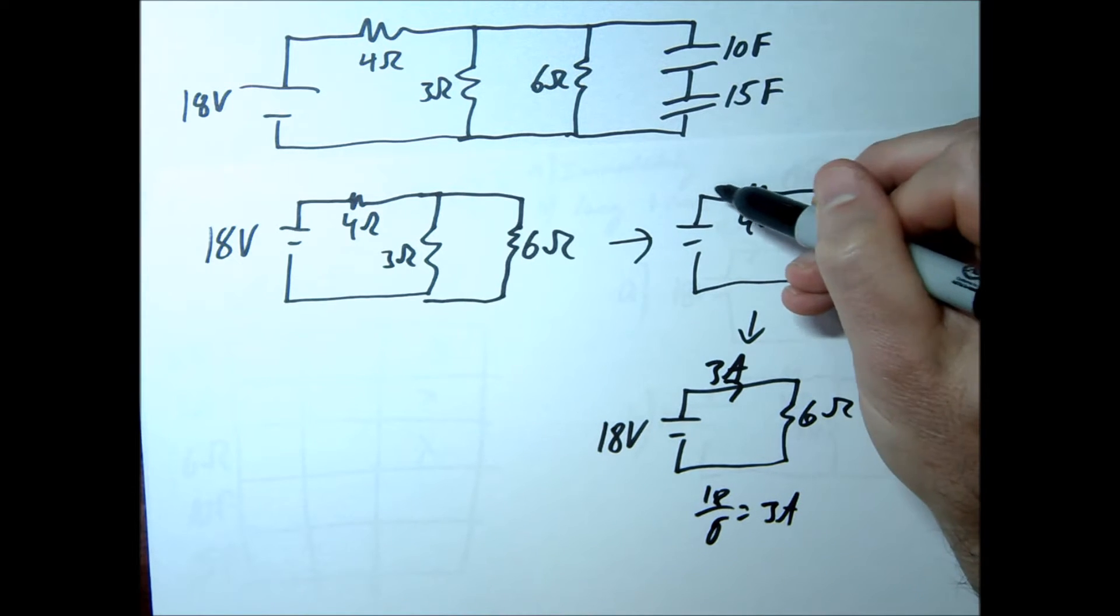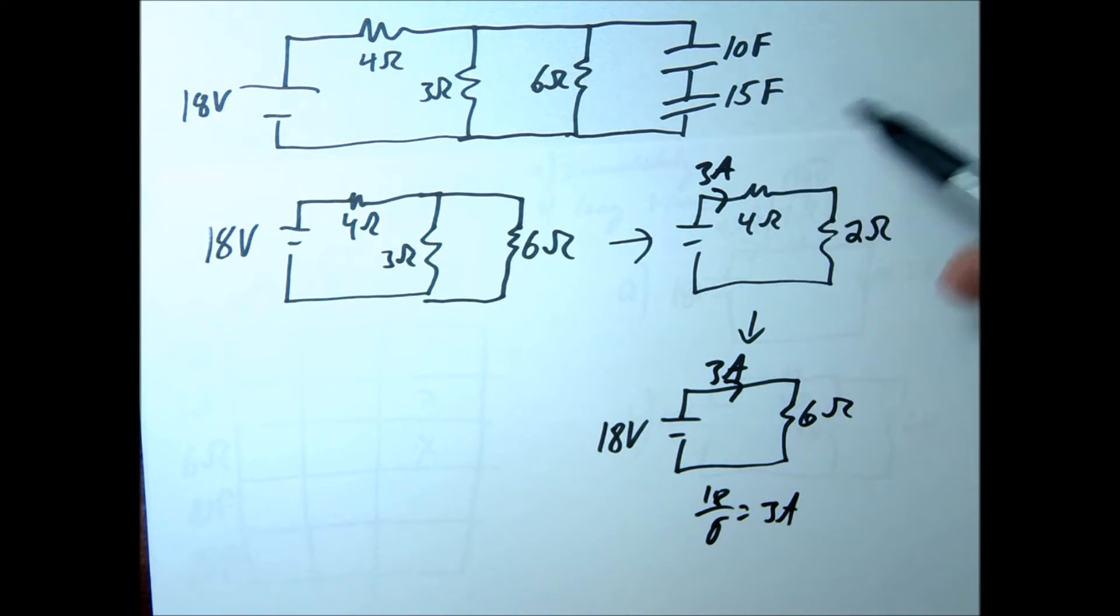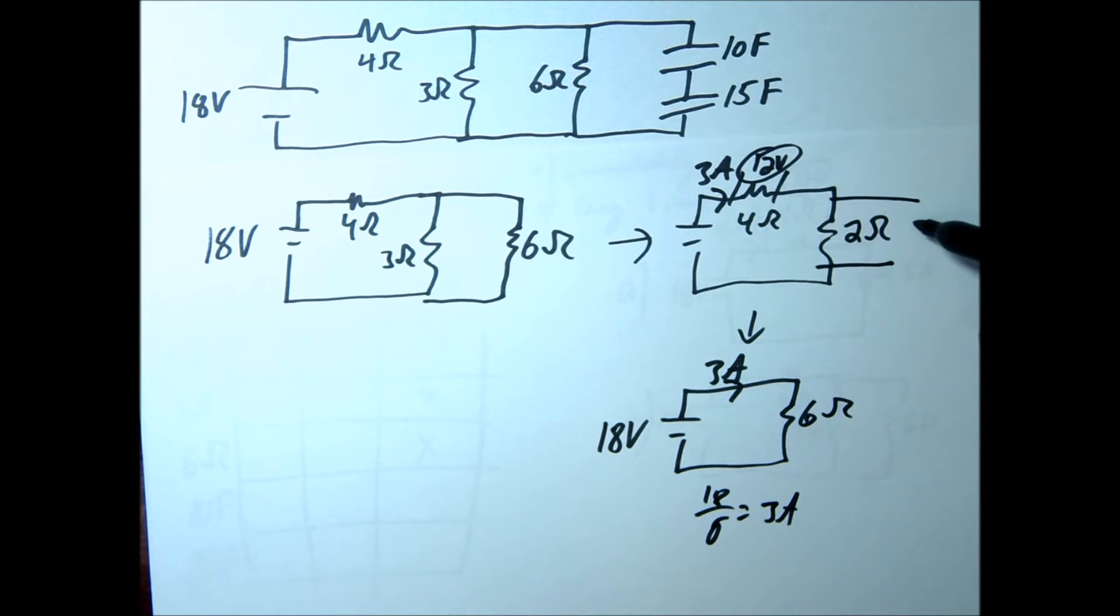18 divided by 6 equals 3 amps, so we have 3 amps through here, which means we have 3 amps through here. I'm going to find the voltage drop across this. V equals IR, that should give us 12 volts here. V equals IR, that should give us 6 volts across here.